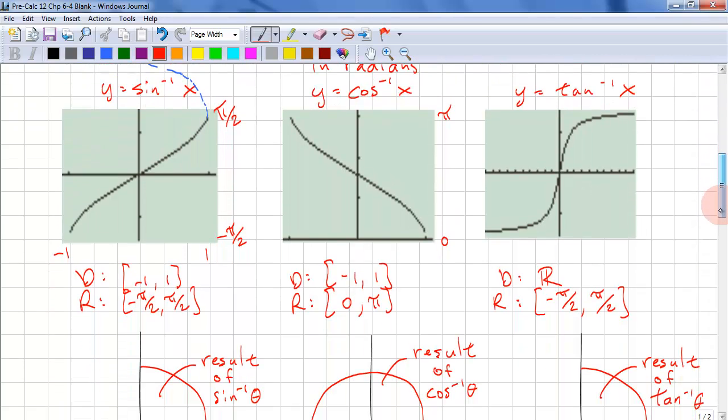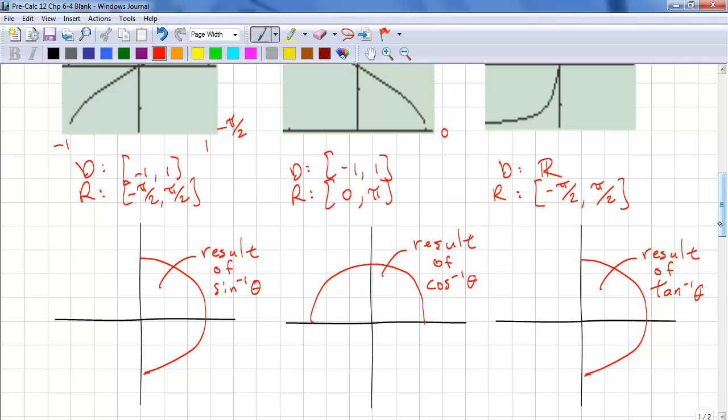So let's look at the unit circle for inverse trig. The result of inverse sine is in quadrants 1 and 4. And the result of cosine is in quadrants 1 and 2. And 1 and 4 for inverse tan. So we need to keep this in mind when we're converting from reference angle to standard angle.